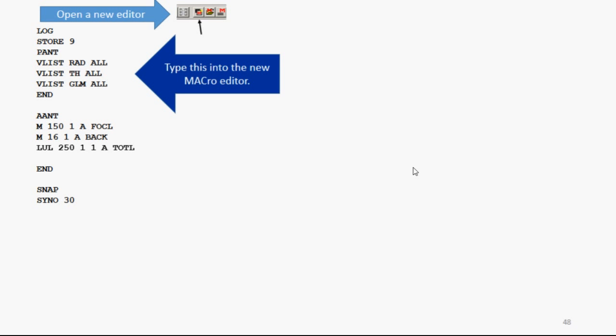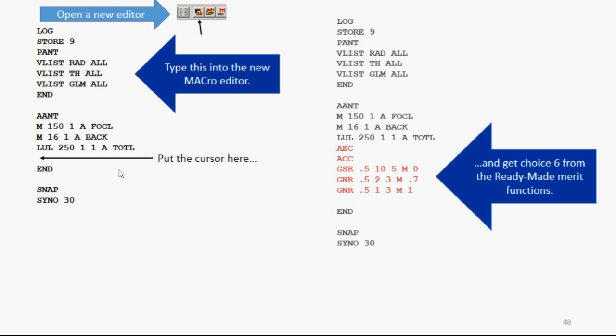To do that, you want to open a new editor. Click the New Editor button. And type these data into the editor window. You want a variable list, radius all, thickness all, and glass models all. You're going to correct the focal length, let's say 150. The back focus, I suppose you want that to be 16. Now I'm going to put the cursor right there. And get choice number 6 from the ready-made merit functions, which is right here. And again, the program has added the automatic edge control, automatic center control, and three sets of ray aberrations.